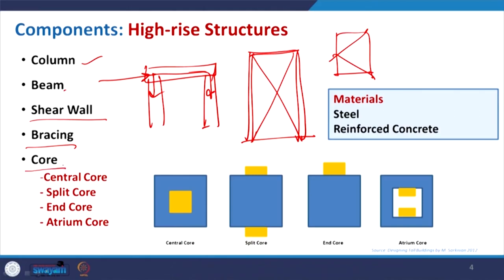We also discussed the core. Depending on position, we have the central core; it may be a split core in different parts, a one-ended core, or we can have an atrium and core. The core gives internal stability. The core can be made of shear wall or frame structure, as we discussed in Part 1 of this discussion on interior structure.